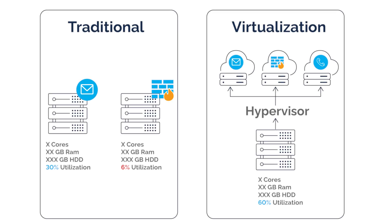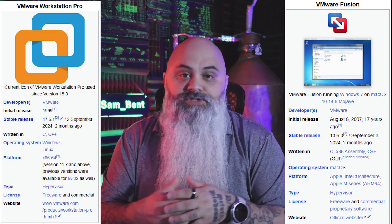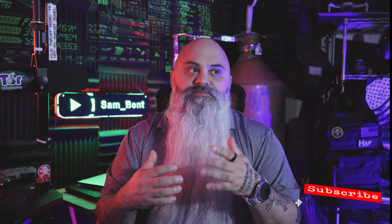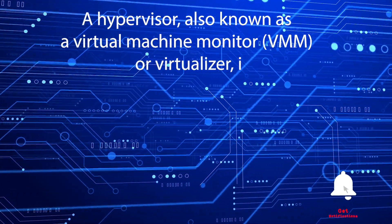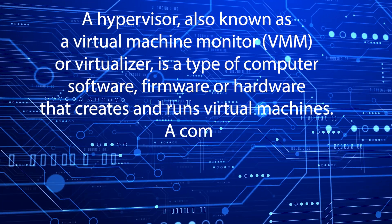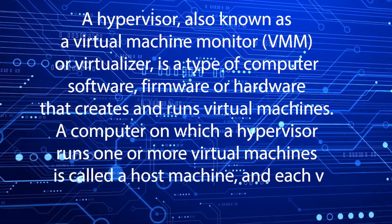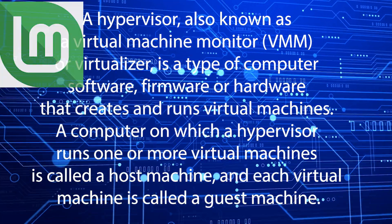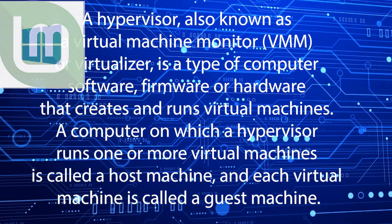Fusion ran for macOS and Workstation was the go-to for Windows and Linux users. Now, whether you're an educator, a business, or just experimenting at home, both of these tools are available to you for free. A hypervisor, simply put, is software that allows you to run multiple virtual machines on one piece of hardware — so you could run a Linux system inside your Windows PC.